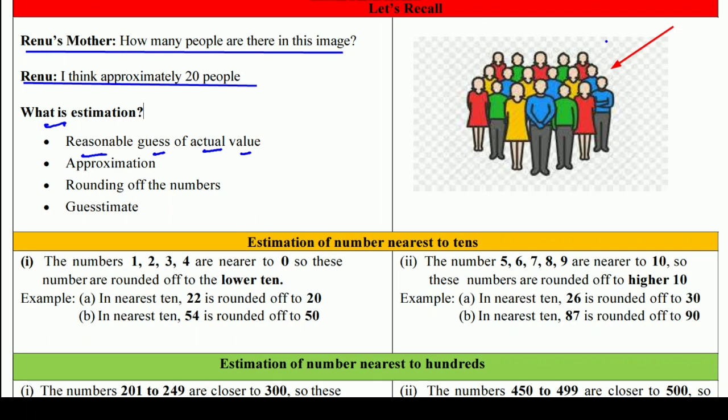जैसे मान लीजिये किसी ने बोला 20 people हैं। अगर मैंने अभी तक count नहीं किया, तो चलिए count करते हैं — यह अगर आप count करेंगे तो 17 people नज़र आते हैं, लेकिन उसने बोला 20। तो near about 20 उसके पास-पास ही है। इसको हम estimation, या approximation, या लगभग, या rounding off of numbers कहते हैं।